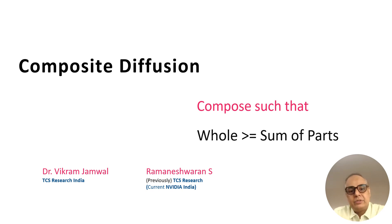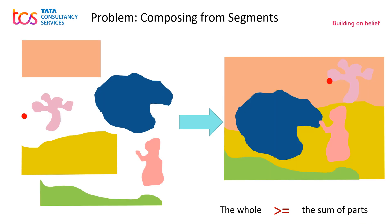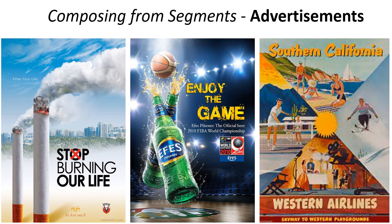Hello everyone, I'm Vikram Jamwal and I shall be presenting our paper on Composite Diffusion: 'The Whole is Greater Than or Equal to the Sum of Its Parts,' a joint work done with Alameshwar. The problem we are tackling is: if you have parts and you're composing them together, the idea is that you generate and compose them in a manner that the whole retains or enhances the properties of the individual components. We need to compose from parts because this is a requirement in the advertisement industry.